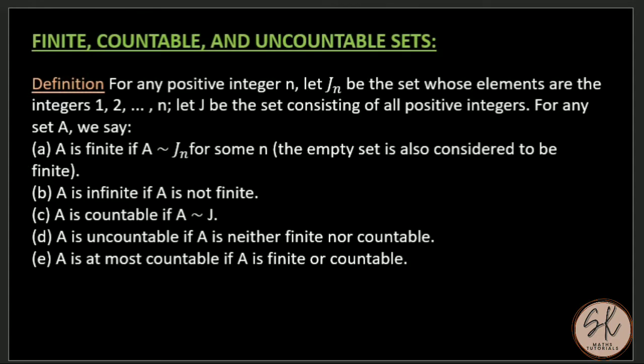Today's topic is finite, countable, and uncountable sets. For any positive integer n, let Jn be the set whose elements are the integers from 1 to n. So Jn equals {1, 2, 3, ..., n}, which is nothing but the set of the first n natural numbers.